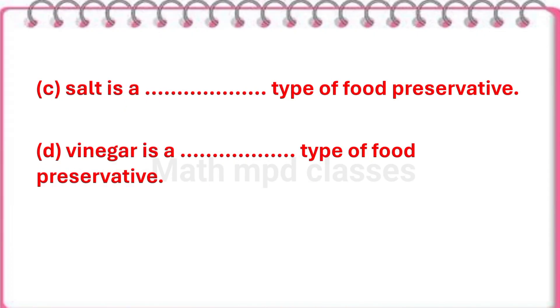Next, fill in the blanks. Salt is a blank type of food preservative. Answer is natural. Last, fill in the blanks. Vinegar is a blank type of food preservative. Answer is chemical.